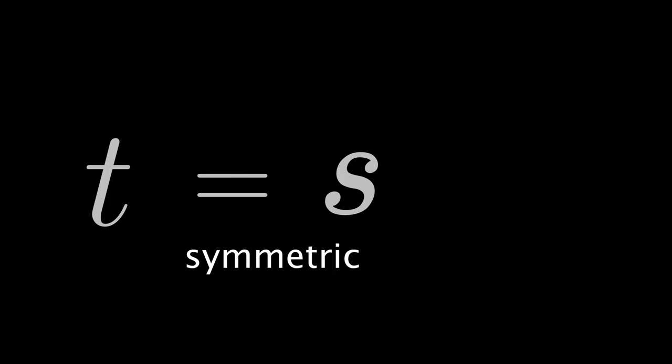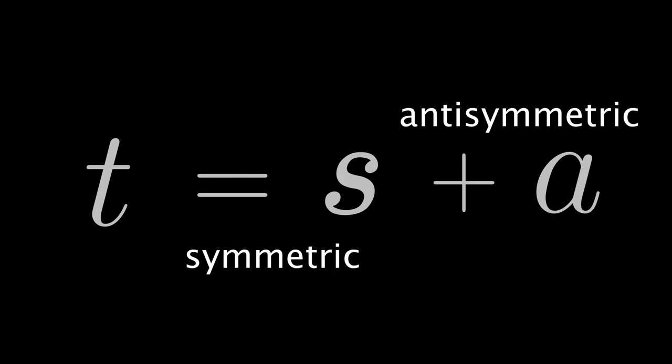Unfortunately, most tensors are neither symmetric nor antisymmetric. But the great thing is, mathematically, we can split every tensor T into a symmetric and an antisymmetric part. T is equal to S plus A.